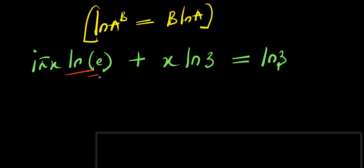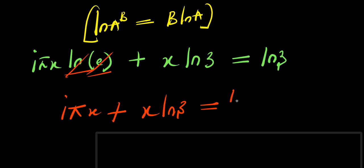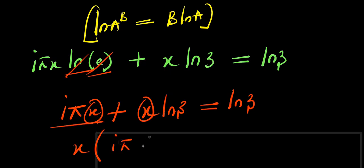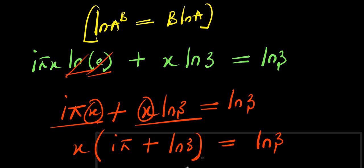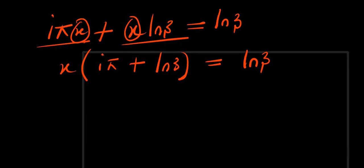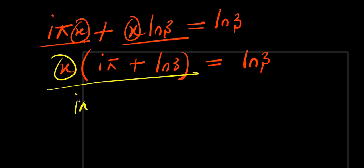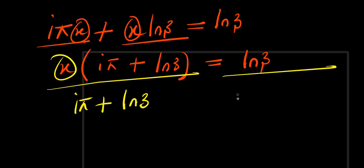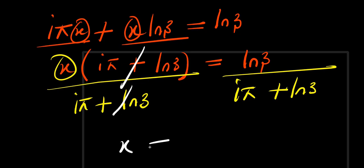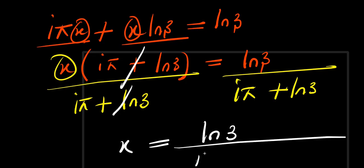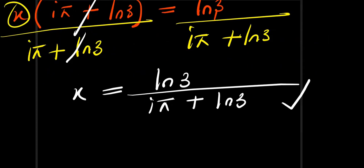Since natural log of e is 1, this simplifies to i times pi times x plus x times natural log of 3 equals natural log of 3. I can factor out x, then divide both sides by x, giving i times pi plus natural log of 3 equals natural log of 3 divided by x. Isolating x by dividing by i times pi plus natural log of 3, I get x equals natural log of 3 divided by i times pi plus natural log of 3. This is the solution from method one.